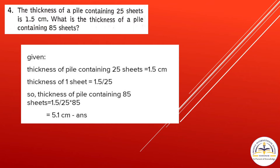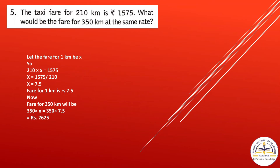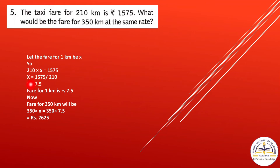Question 5: The taxi fare for 210 kilometers is rupees 1575. What would be the fare for 350 kilometers at the same rate? Let the fare for 1 kilometer be x. So 210 times x equals 1575, giving x equals 7.5 rupees per kilometer. For 350 kilometers: 350 times 7.5 equals rupees 2625.